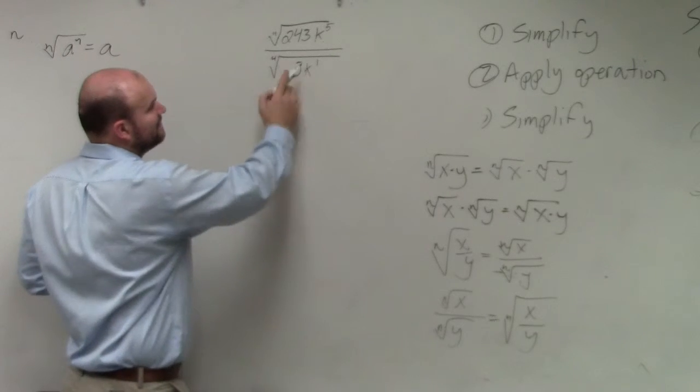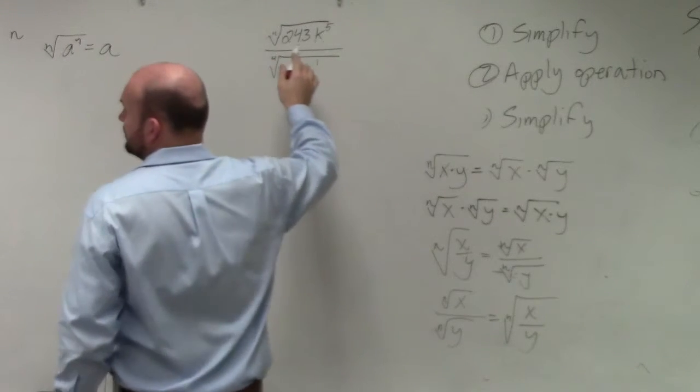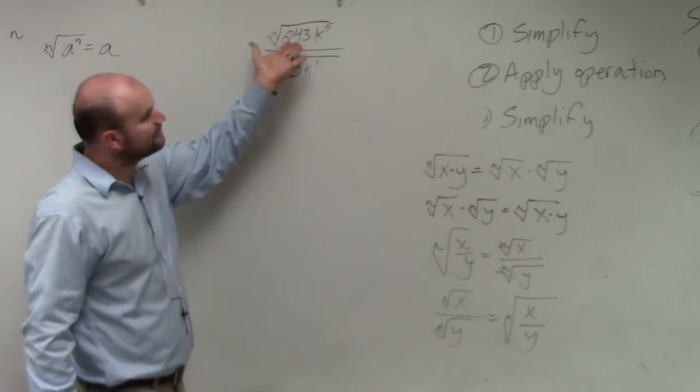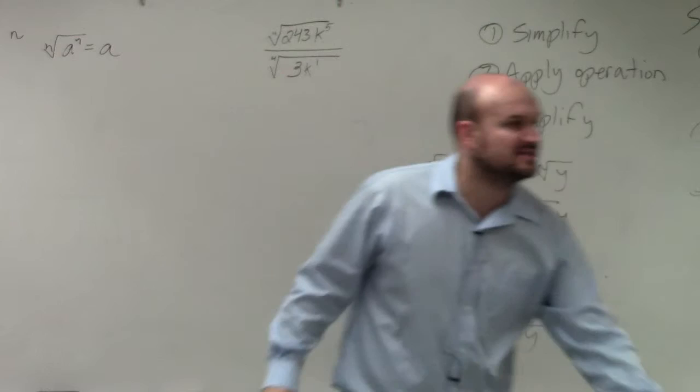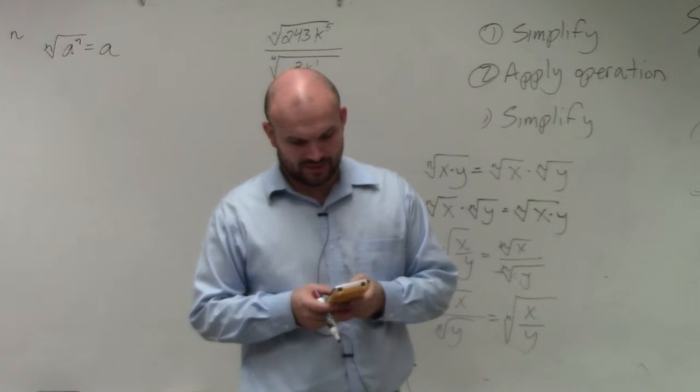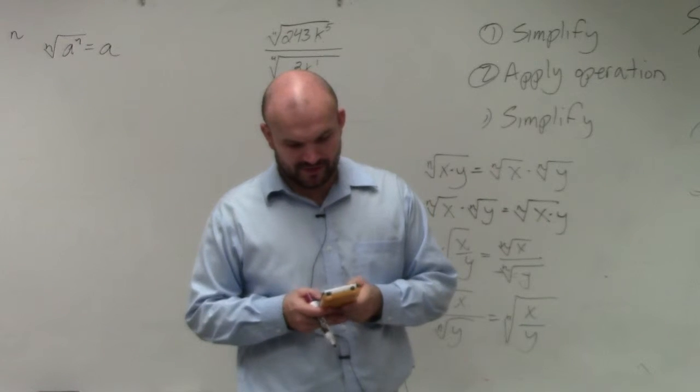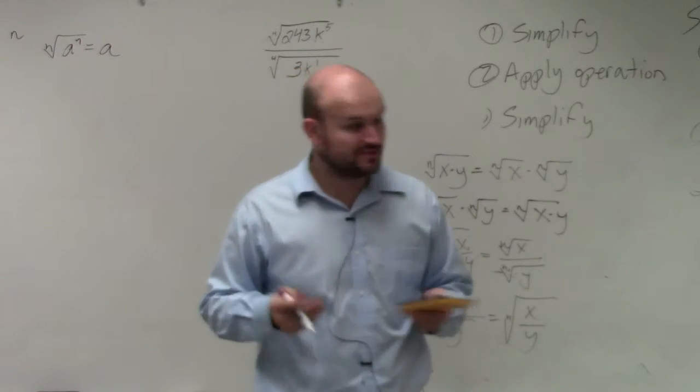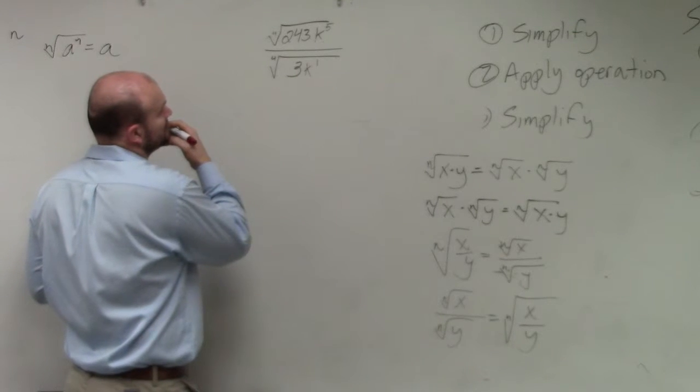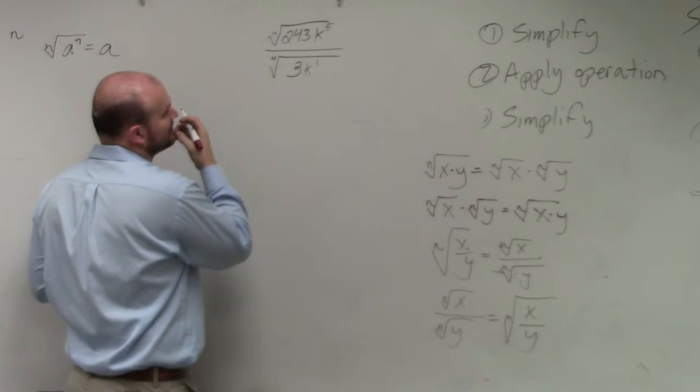Actually, you know what, let's simplify each one of these. 243 is not a quartic number, but is there a number that divides into 243? Well, let's check. 243 divided by 81 is 3. So what I'll do, action. I didn't look at it like that.